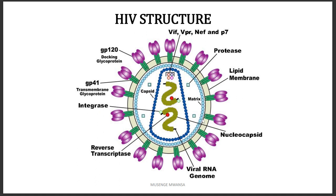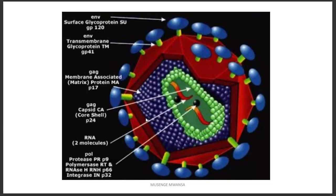To recap the structure: we have GP120 — glycoprotein 120 — which attaches to receptors on either macrophages or T lymphocytes, and GP41 which is embedded in the envelope. We also have the GAG group of structural proteins: the matrix made up of p17, which maintains structure, and the capsid made up of p24, which contains the RNA and other internal proteins.